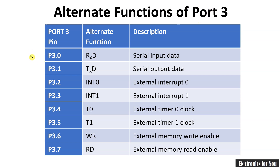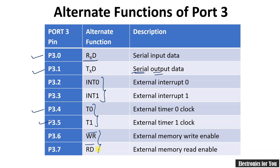The alternate functions for port 3 are: P3.0 is the receiver for serial communication (RXD); P3.1 is the serial output data to transmit data (TXD); INT0 and INT1 are the two external interrupt signals for 8051. P3.4 and P3.5 are the external clock signals for Timer 0 and Timer 1 respectively. WR-bar and RD-bar are the write and read strobes for the external memory.